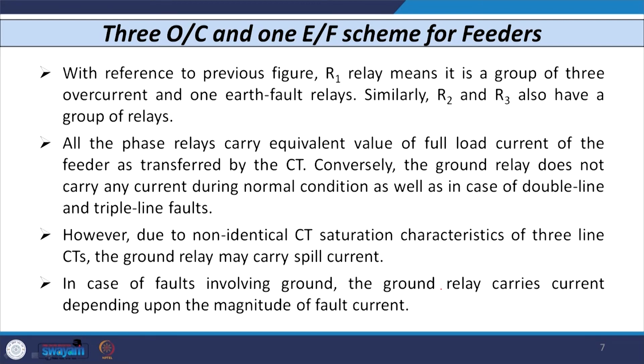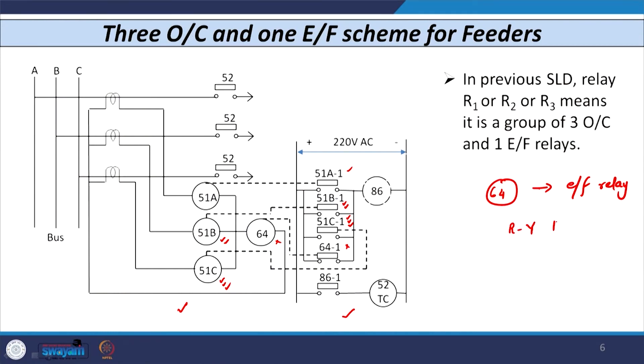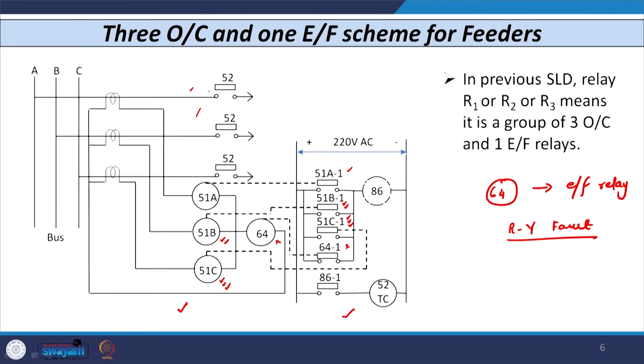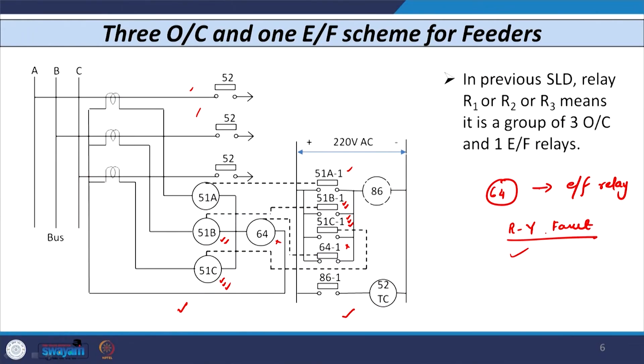When a phase fault such as R-Y fault (line-to-line fault) occurs, the phase relay must operate and the ground relay should not operate. The current in R and Y phases increases; in the secondary, units 51A and 51B are energized and their contacts 51A1 and 51B1 close, energizing the auxiliary relay coil 86, whose contact 861 trips and energizes the trip coil 52TC. For an R-Y-B triple line fault, units 51A, 51B, and 51C all energize and their contacts all close, initiating tripping.